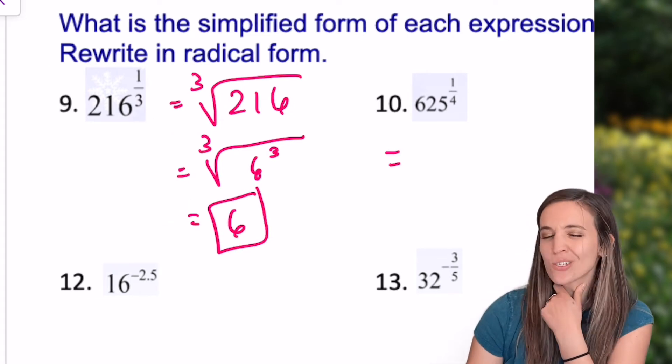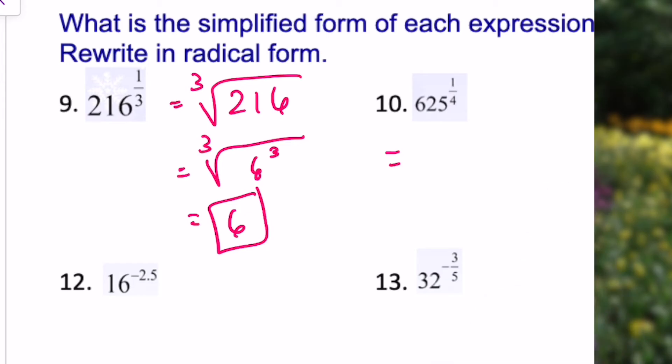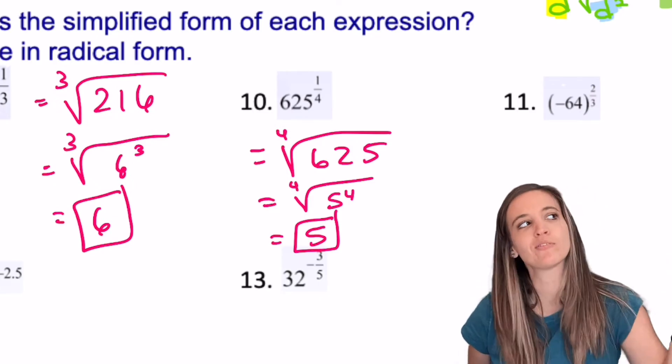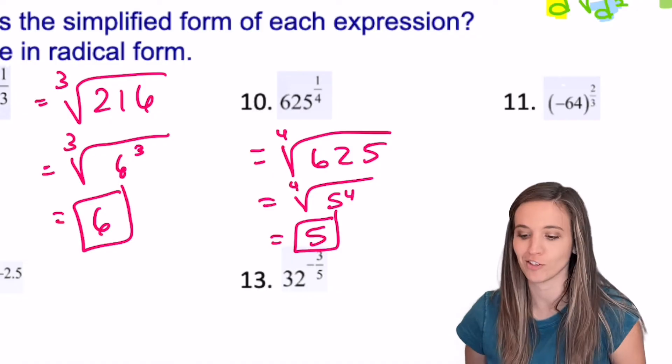Let's try another one. The next one, 625 to the 1/4th power. You got it. All right, so we get 5 there because 5 cubed is 125 times 5 again is 625. So 5 to the 4th power.